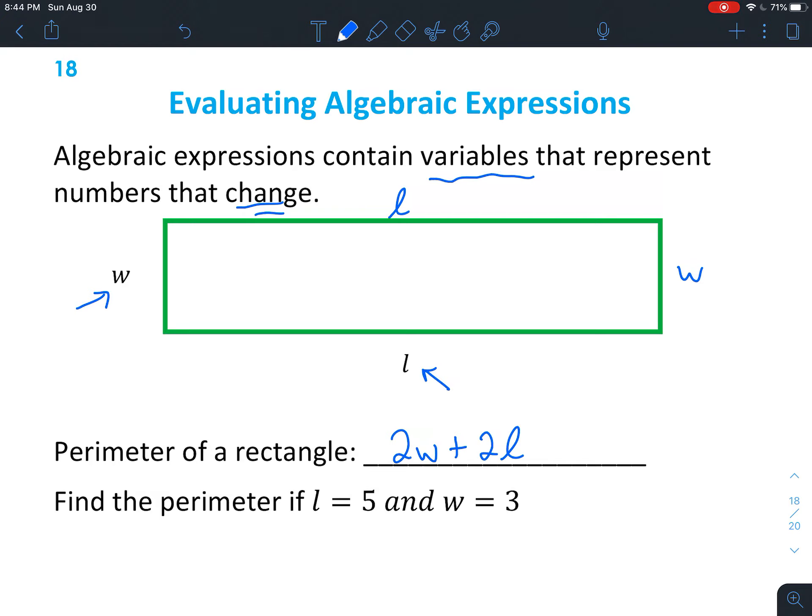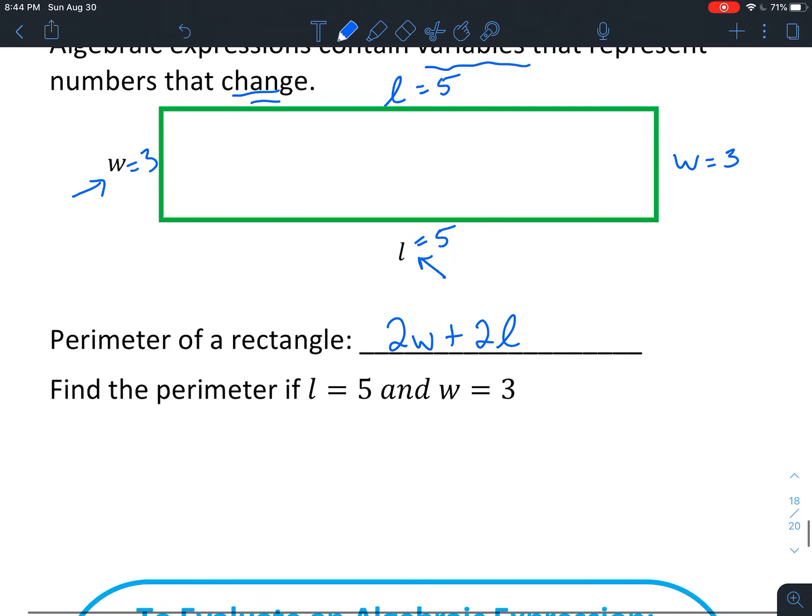So let's find the perimeter if L equals 5 and W equals 3. So in this case, W is 3, L is 5. And you can just substitute it straight in to this problem right here. So we're going to say 2. Instead of a W, you're going to put W equals 3.